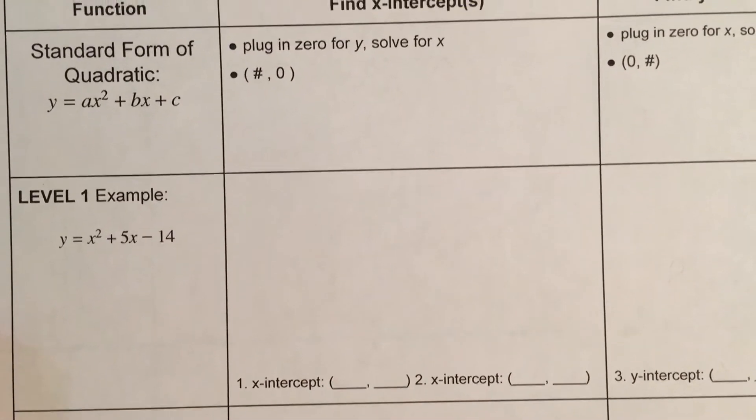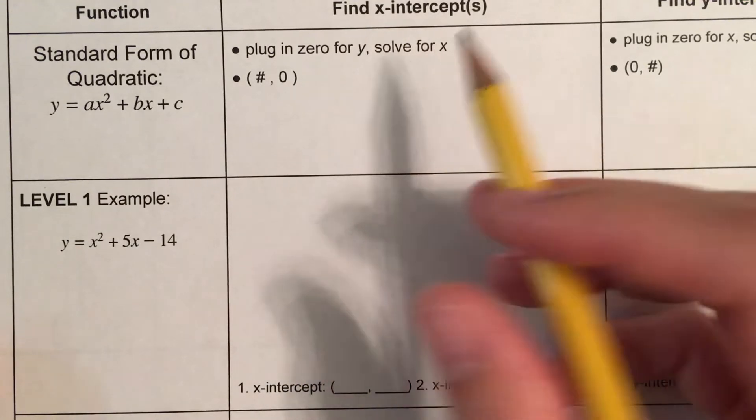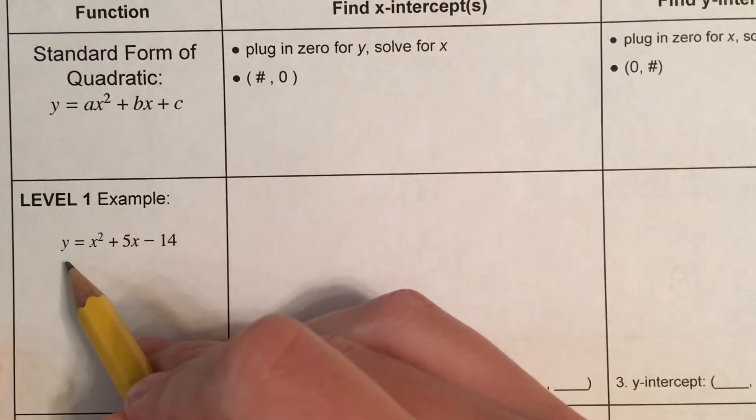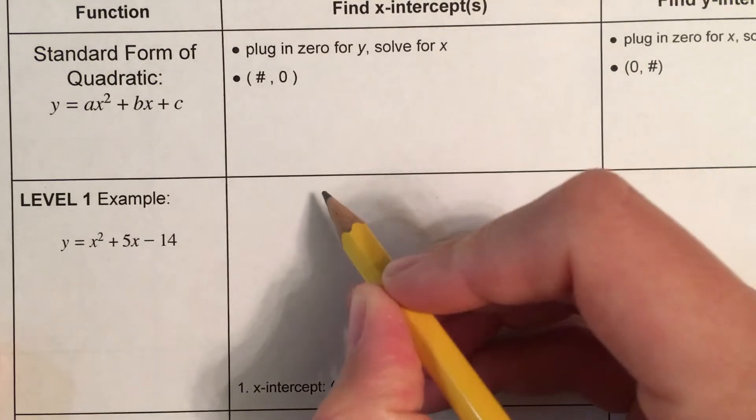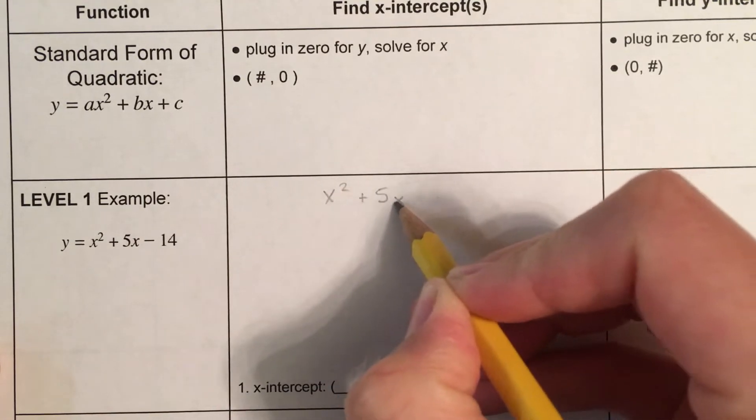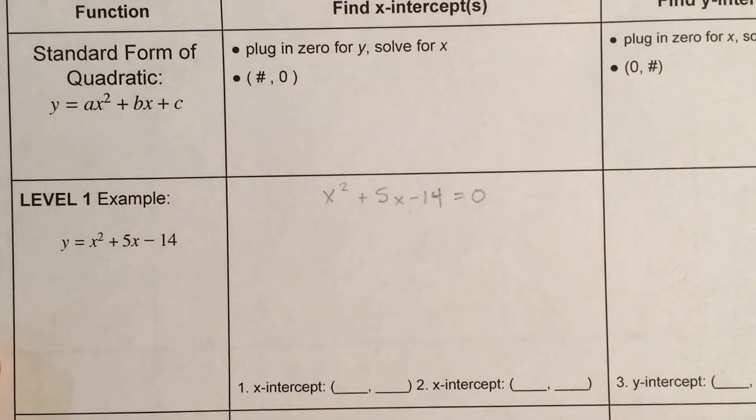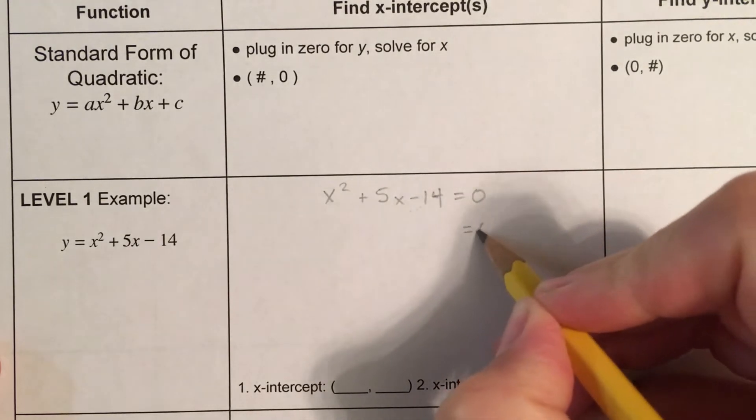So, this starts off familiar, though. Let's start with the x-intercepts. We plug in 0 for y and solve for x. So I'm going to write y equals x squared plus 5x minus 14, and I'm going to go ahead and make that equal to 0. So, the next step here is to factor this out. This is equal to 0.